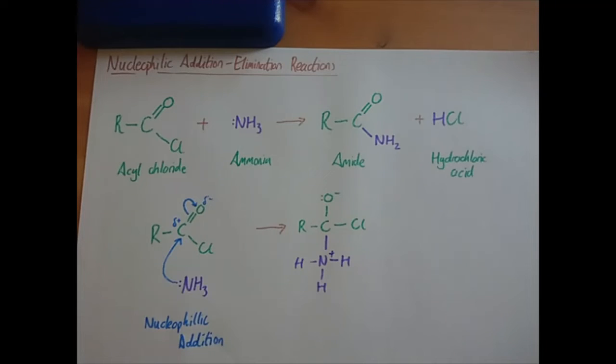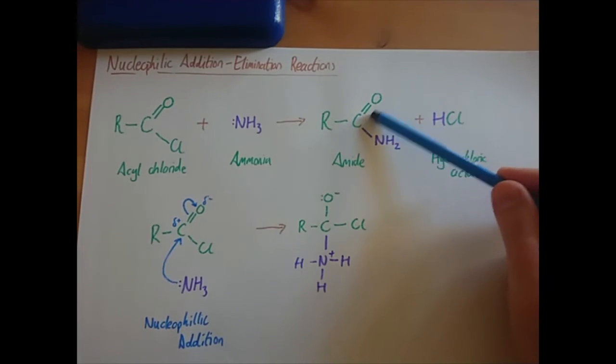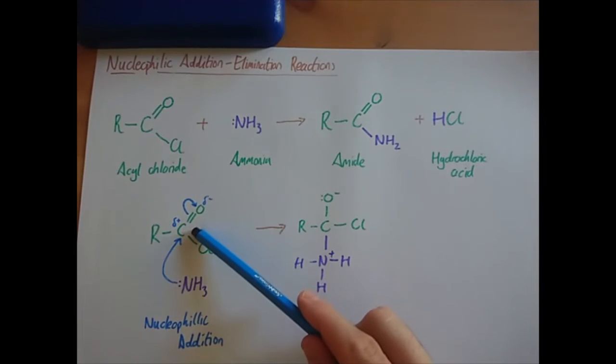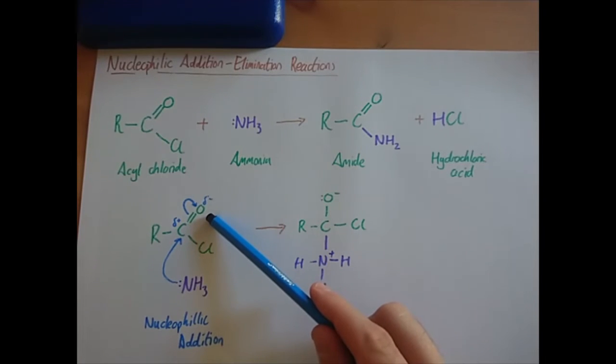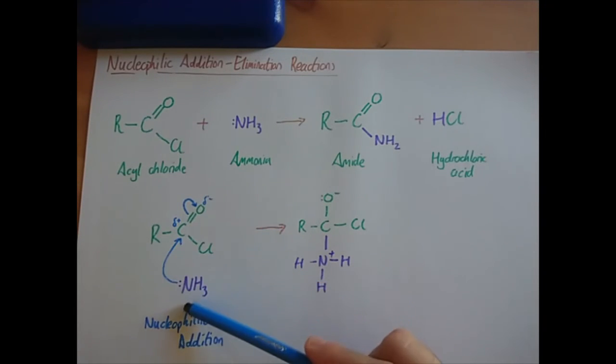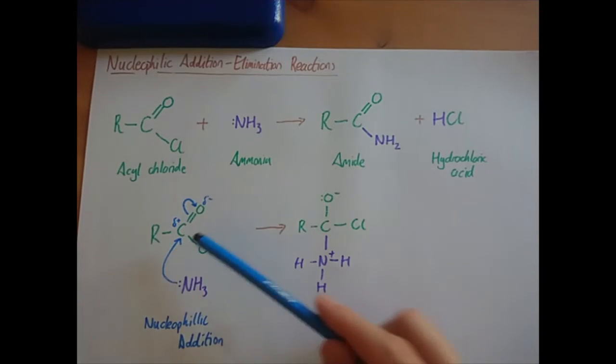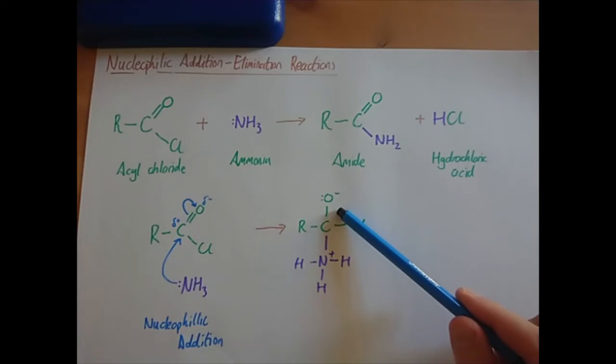This bit is a little bit less intuitive I suppose, but if you look at the amide that we're trying to make, we've got the carbon-oxygen double bond. But in this first addition stage we broke the carbon-oxygen double bond so we could add the ammonia onto it. So what happens in the second stage?